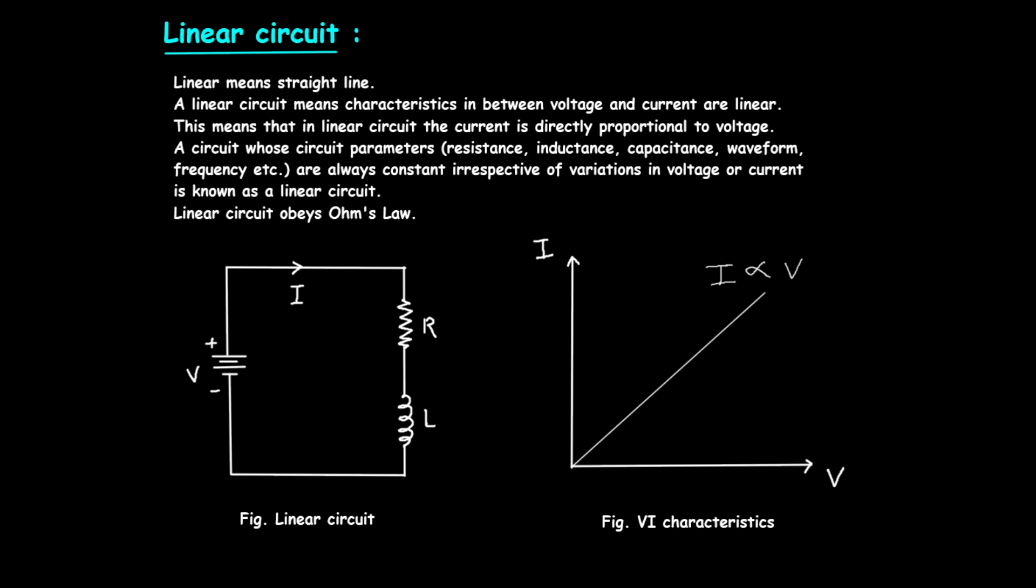Now, let's talk about the main characteristics of linear circuits. 1. Linear Relationship: In a linear circuit, the current, I, is directly proportional to the voltage, V. Mathematically, we express this relationship as I equals K times V, where K is a constant.